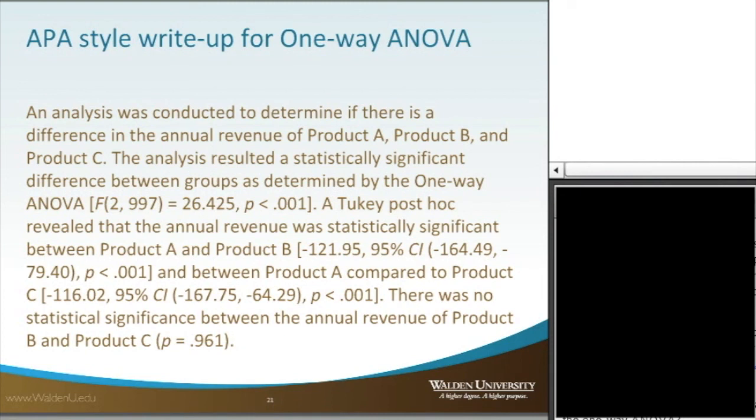There was no statistical significance between the annual revenue of product B and product C, and here we just report the p value. And so we're looking at providing the information for those comparisons which were statistically significant, and then we just provide that. For where there's no statistical significance, we just provide the p value. Thank you.